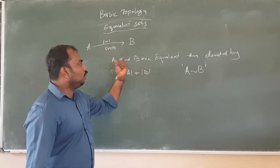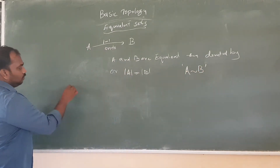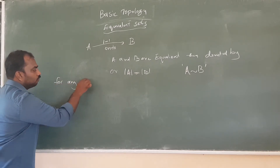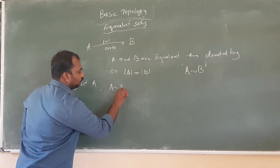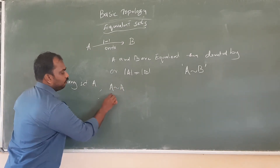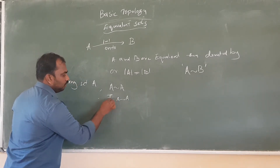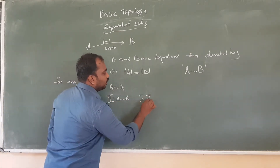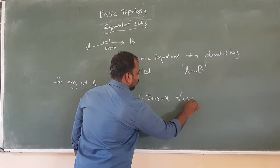If A and B are equivalent, it is denoted by A equivalence B. Every set A is equivalent to itself — that is, A is equal to A — such that the identity function i(x) = x for every x belonging to A.